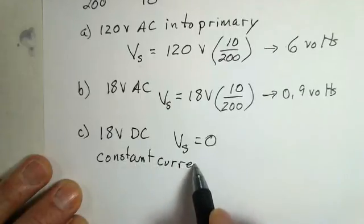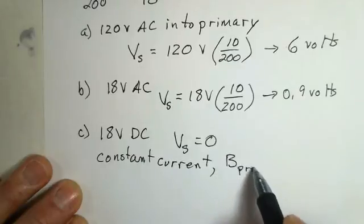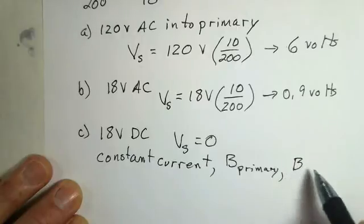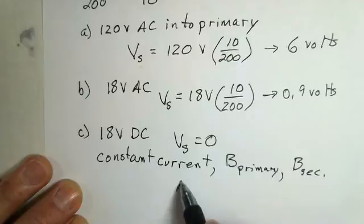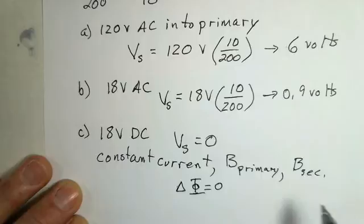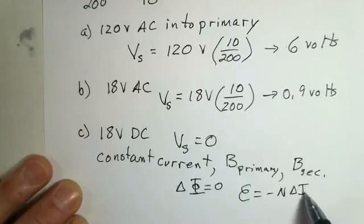That constant current creates a constant magnetic field in the primary coil, which leads to a constant magnetic field in the secondary coil, which leads to a change of magnetic flux in the secondary coil of zero. And our EMF is minus N change of magnetic flux over change of time.